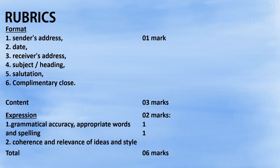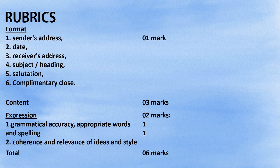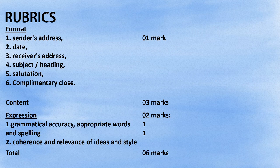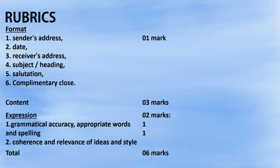Let's discuss the rubrics. The format requires the sender's address, date, receiver's address, subject or heading, salutation, and complimentary close — that's the same in all formal letters. The format carries one mark, so if you miss anything you lose half a mark. Content is worth three marks. Expression is worth two marks, which splits into grammatical accuracy, appropriate words and correct spelling, and coherence and relevance of ideas and style. The total for this question is six marks.